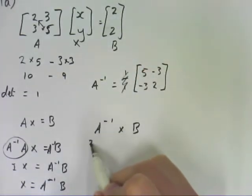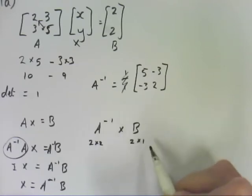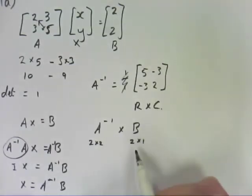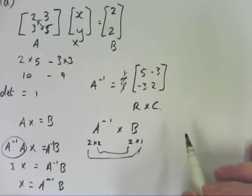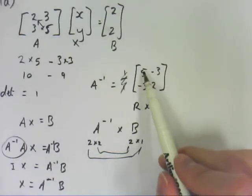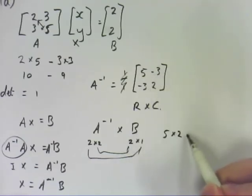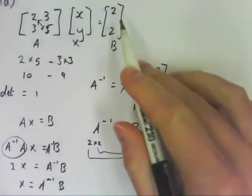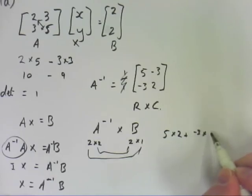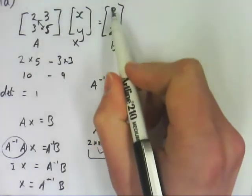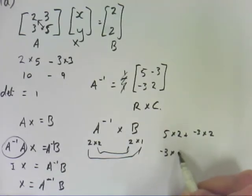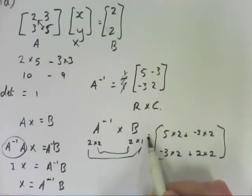Let's just check we can do it. It's 2 by 2 by 2 by 1, rows and columns, remember. So yes, I can. And my result will be a 2 by 1, which is what we'd expect. So if we do that, we use this first row here. So 5 times 2 plus negative 3 times 2. And we use the bottom column to do this one here. We get minus 3 times 2 plus 2 times 2. So that is that.